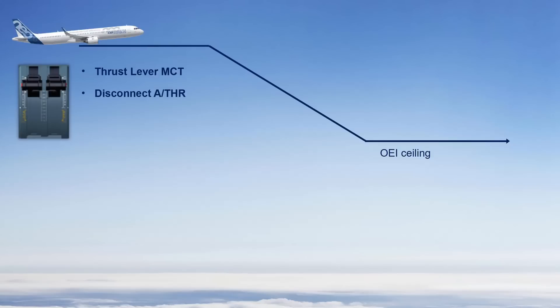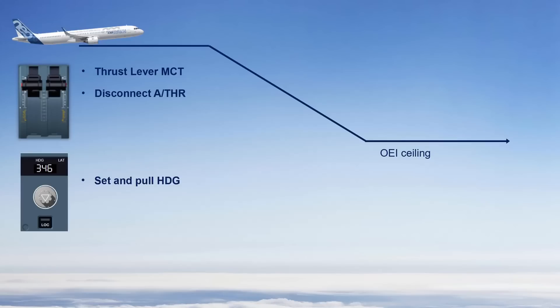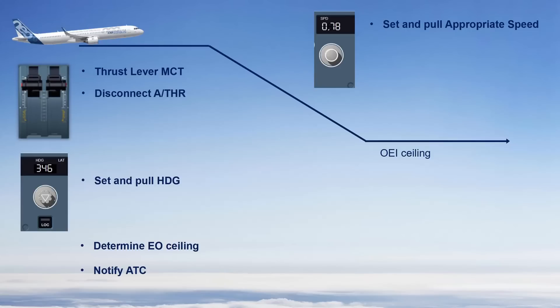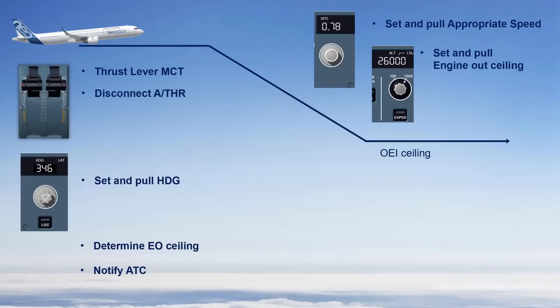Now let us take a look at the different steps to apply in the event of an engine failure in cruise. In this situation, you must apply the following actions: set all thrust levers to MCT; disconnect the autothrust to avoid any engine thrust reduction at the engagement of the descent mode; set and pull heading as appropriate to ensure a safe trajectory; determine the engine-out ceiling corresponding to the strategy considered; when appropriate, notify ATC; on the flight control unit, set and pull the appropriate speed; set and pull the engine-out ceiling corresponding to the descent strategy.